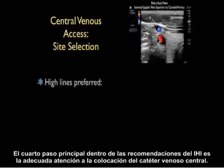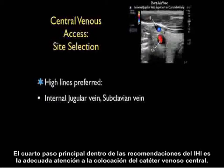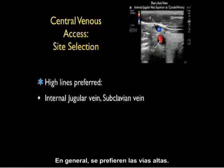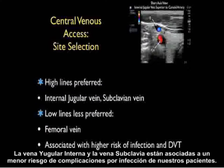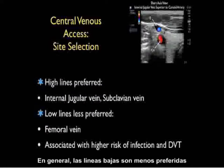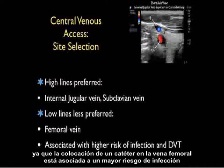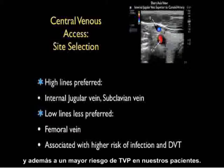The fourth main step is adequate attention to site selection for placement of a central venous catheter. In general, high lines are preferred — the internal jugular vein and subclavian vein are associated with a decreased risk of infectious complications. Low lines are less preferred, as placement of a catheter into the femoral vein is associated with a higher risk of infection and also a higher risk of DVT.